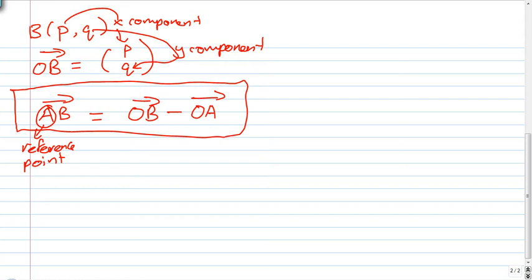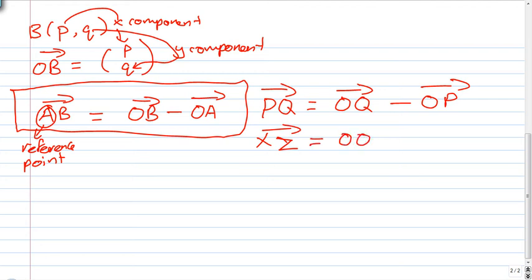Do remember this formula. If you have PQ, straight away you can represent this as OQ minus OP. If you have XZ, you can represent XZ as OZ minus OX. So do take note of this.